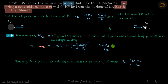We have Earth and we have Moon. If we have to launch a spaceship from the surface of the Earth, we need to find what is the minimum work that is to be performed to bring it to the surface of the Moon slowly — so it should not ram into the Moon, it should just land very softly on the surface of the Moon.